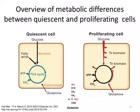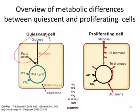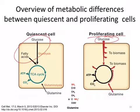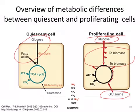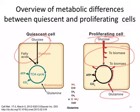In summary, quiescent cells primarily oxidize glucose and fatty acids, utilizing the TCA cycle and producing the ATP they need to survive. Whereas proliferating cells take up much more glucose, lots of fatty acids, and lots of glutamine, and they create the biomass — the lipids, nucleotides, and proteins.